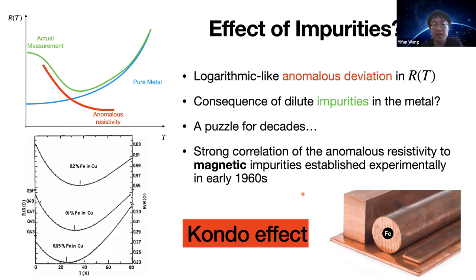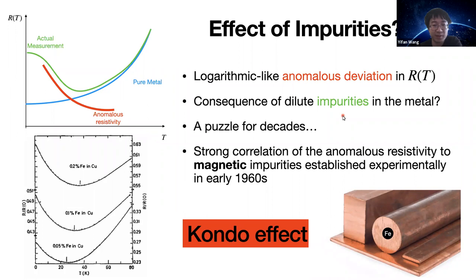With increasing precision in these measurements, people could identify the precise deviation between the actual measurement and the prediction from the idealized model of pure metal. The deviation takes the form of a logarithmic dependence on temperature. An immediate thought was that it could be due to some impurities in the metal. However, for some metals the concentration of impurity did not lead to this behavior, while for others it did. This remained a puzzle for decades.